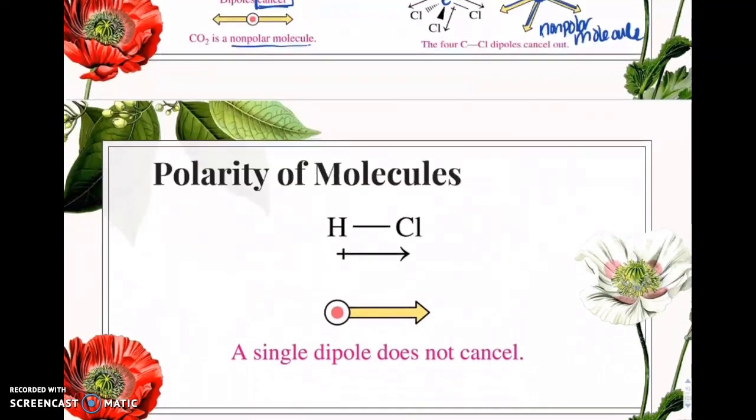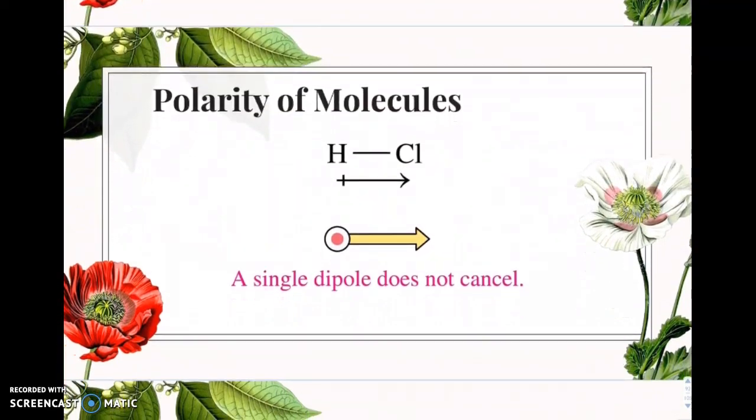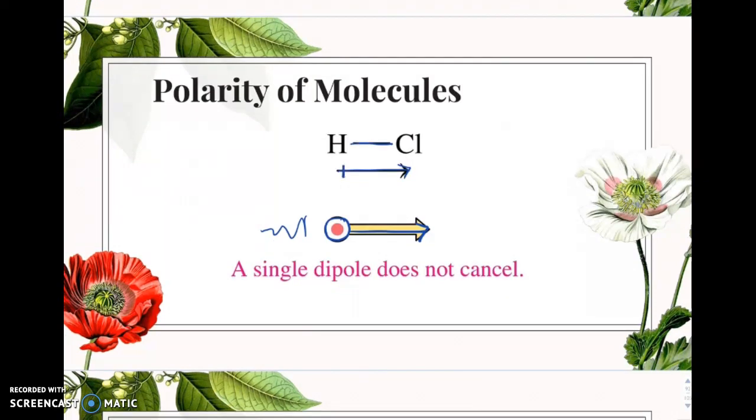Let's take a look at some polar molecules. If you have only one bond and it's polar, the molecule is polar. It's pretty simple, right? This polar dipole only goes in one direction. There's nothing on the other side to cancel it out. So you're going to have a polar molecule.